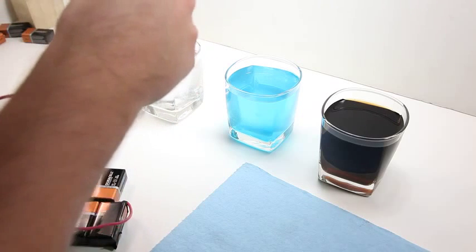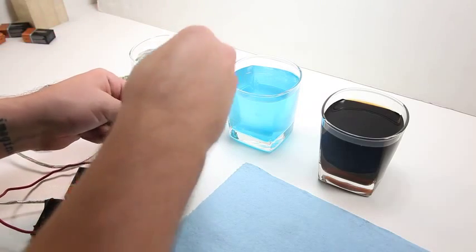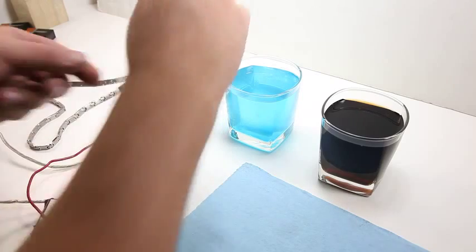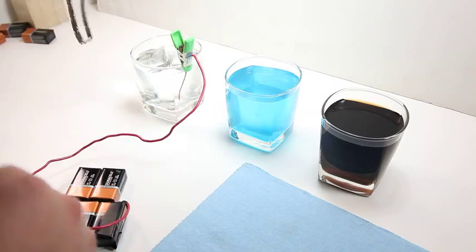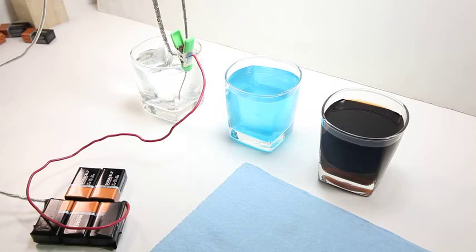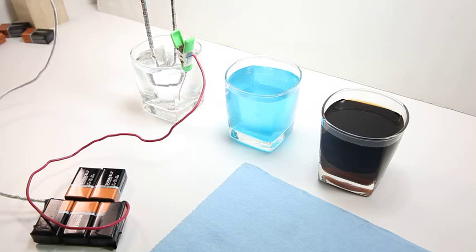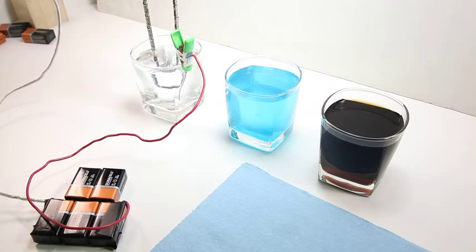You put the negative in the solution and then the positive is connected to the piece, and we'll see what happens here. Looks like it's changing colors, so that proves that it is in fact titanium.